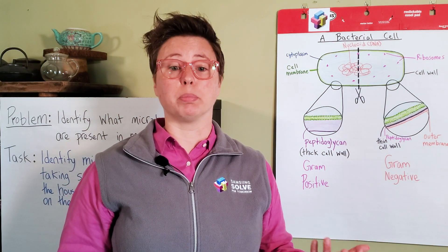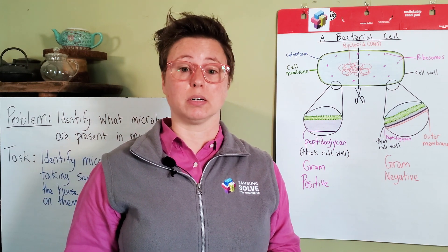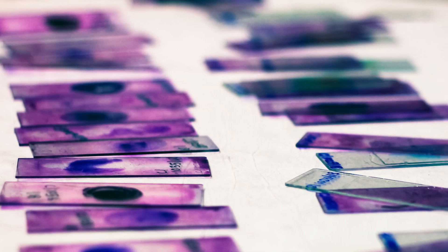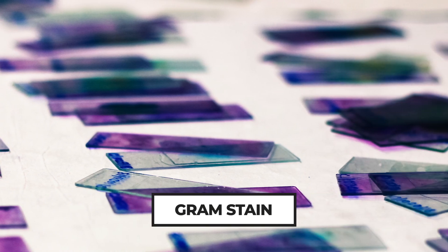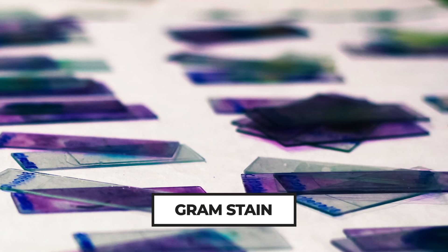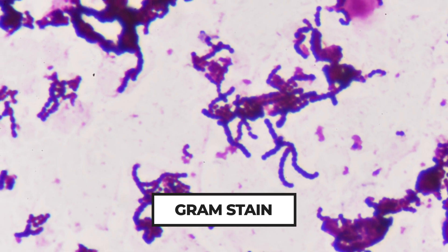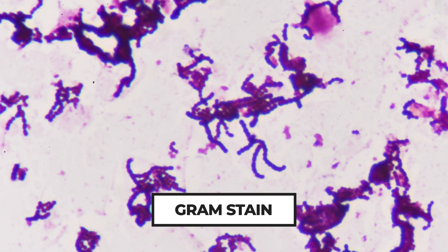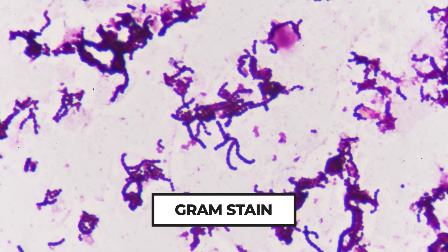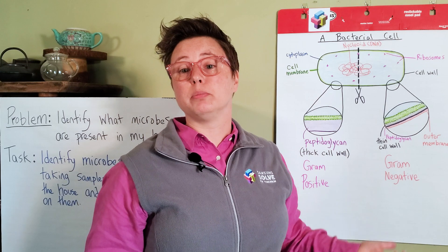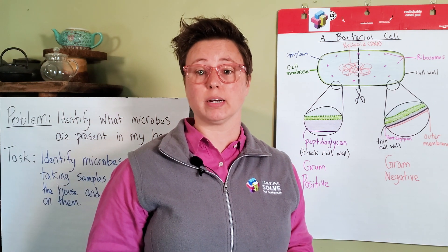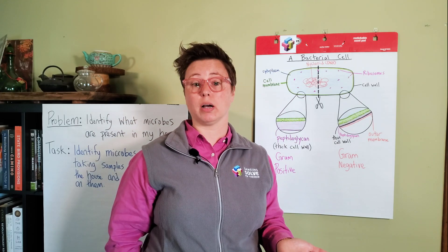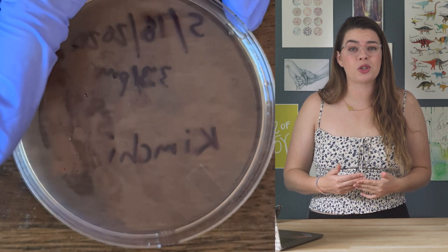Fun fact: humans do not have peptidoglycan in any of our cell structures. That's one reason antibiotic compounds that affect peptidoglycan can burst and kill bacterial cells but don't do any direct harm to human cells. Along with the shape of bacterial cells, you can use something called a gram stain — a special purple dye that sticks to the thick peptidoglycan layer in a gram-positive cell wall but not a gram-negative one. Our MacConkey plates do a little bit of that work for us, because only gram-negative bacteria will grow on this agar.